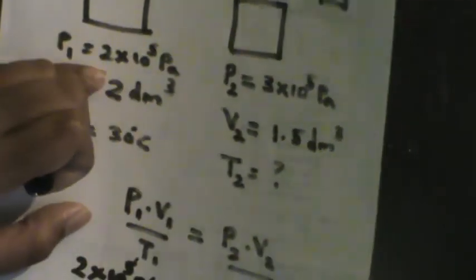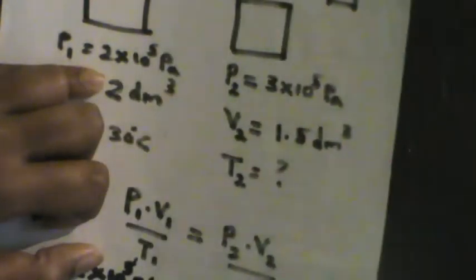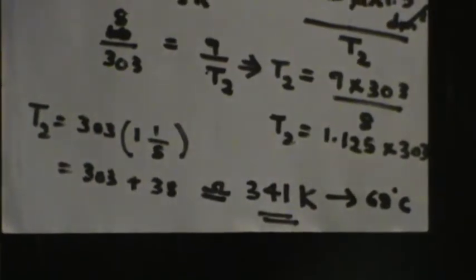That gives approximately 341 Kelvin. So the temperature of the second system is approximately 341 Kelvin. Converting back to Celsius: 341 minus 273 equals 68 degrees Celsius. The temperature has increased by 38 degrees Celsius. That is an application of the combined gas law in which we kept the mass, or number of moles, constant.